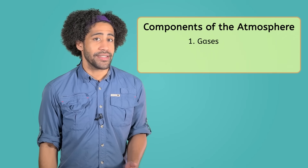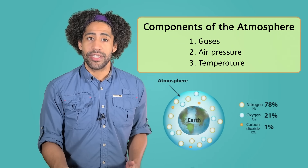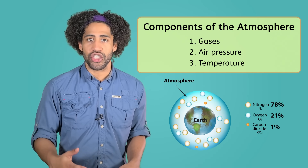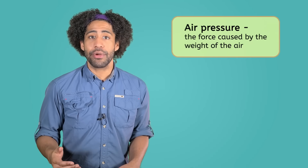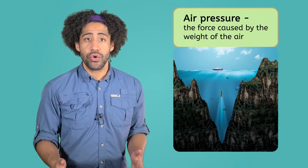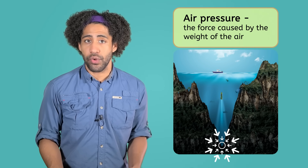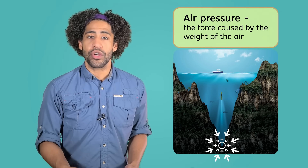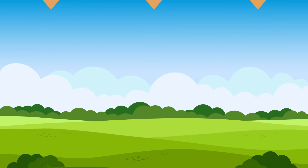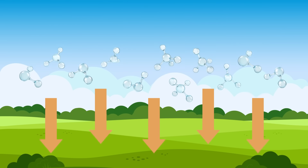Along with gases, air pressure and temperature are also important components of the atmosphere. We see this same blend of gases throughout the atmosphere, but air pressure and temperature change as we go higher up. Air pressure is the force caused by the weight of the air. In our lesson on Earth's oceans, we learned that the weight of the water adds to the pressure the deeper we travel towards the ocean floor. Similar to the ocean floor, the Earth's surface is where the air pressure is the greatest.